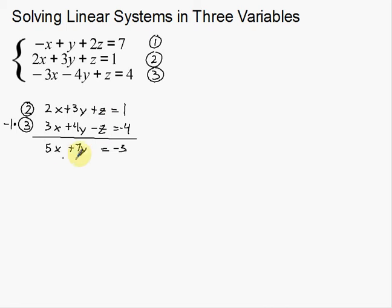Now I'm left with only x and y. I need to keep track — I'm going to call this equation four. Now I'm going to do this process all over again, except using two different equations, and I'm going to eliminate the same variable — the z. So this time I'm going to use equations one and two. I need to multiply equation two by negative two so that I have a positive 2z and a negative 2z.